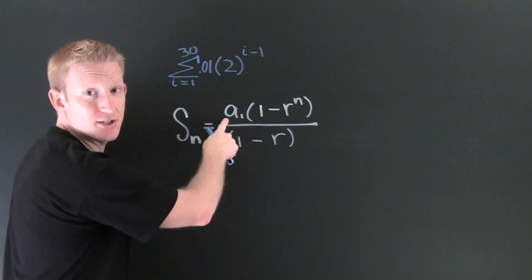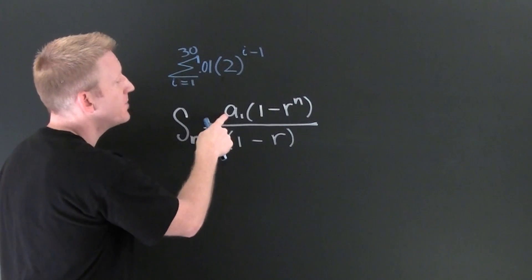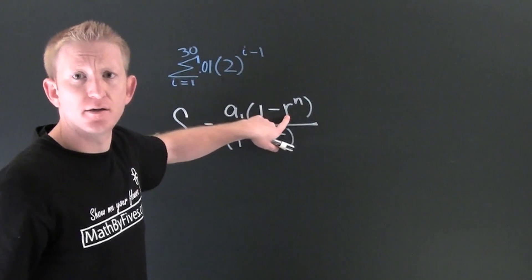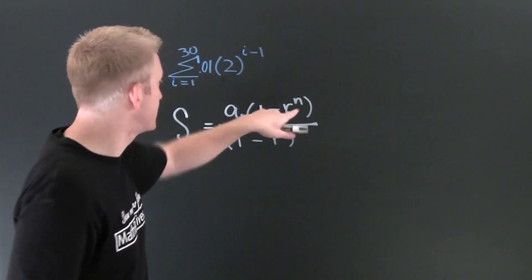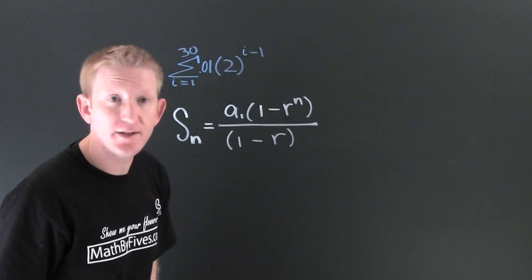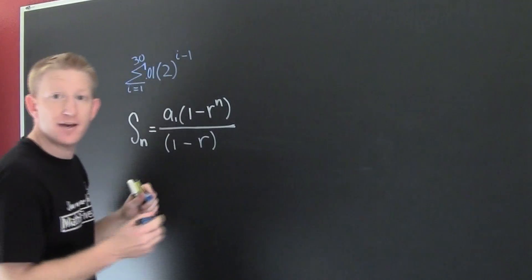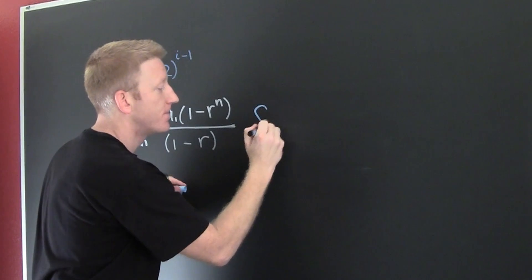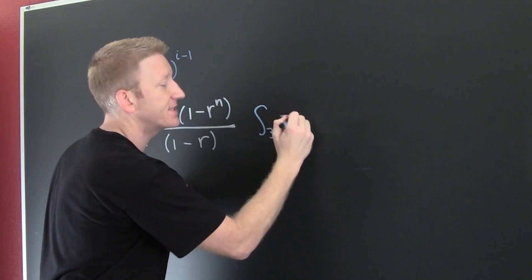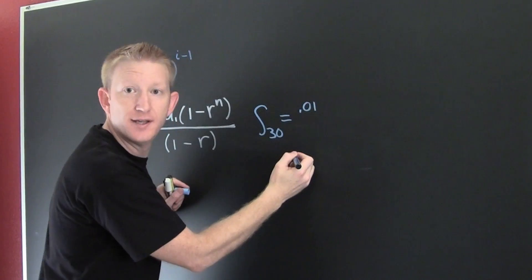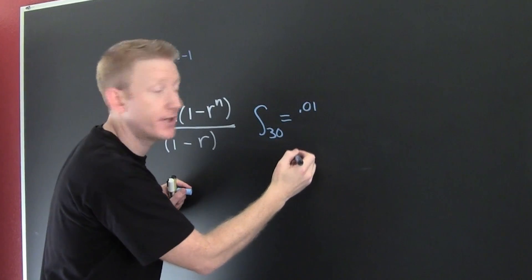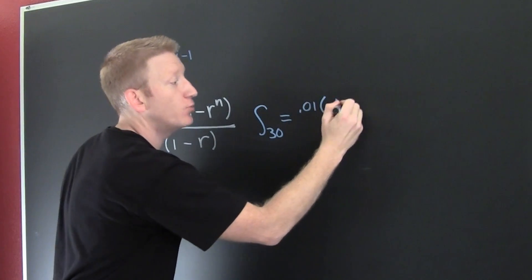a_1 is your initial starting value, it's gonna be a penny, and then r is gonna be our base. So let's throw this up in there. We're gonna have S_30, that's gonna be 0.01, that was the initial amount that you started with.